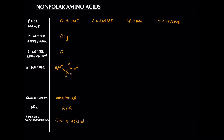Let's move on to alanine, also a very simple amino acid. Its three-letter abbreviation is ALA, its one-letter abbreviation is A, and its structure is also rather simple — we have our N-terminus, C-terminus, and just one carbon, and that's it. Its classification is nonpolar. Its PKR is also not applicable because there is no acidic hydrogen in the R group. Special characteristics are not within the scope of the MCAT.